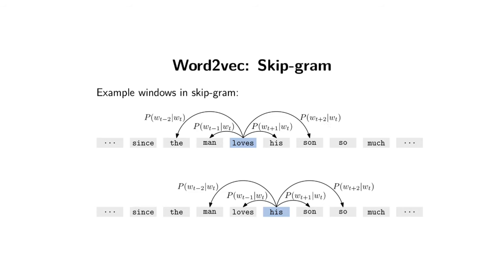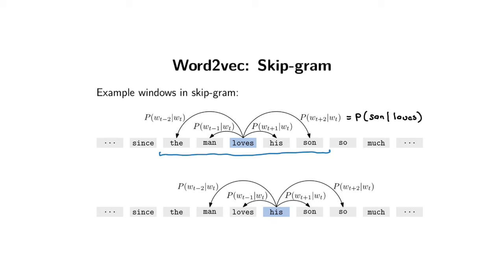If we have a sentence like 'since the man loves his son so much,' the basic idea behind skipgram is that we have a little window with the center word, then words that precede it and words that follow it. We want to model the probability of the words before and after the center word. For instance, we want the probability of the word 'son' given that the center word is 'loves.' That's what the model will try to do.